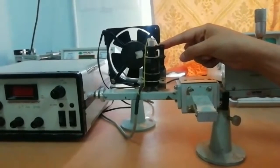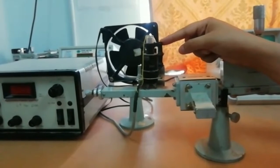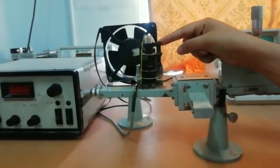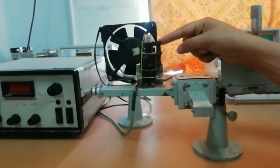A Gunn diode is mounted inside the waveguide with a BNC connector for DC bias. Each Gunn oscillator is supplied with a calibration certificate giving frequency versus micrometer reading.